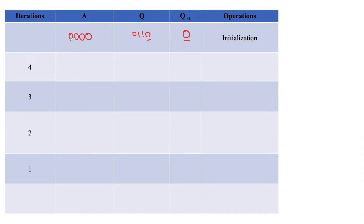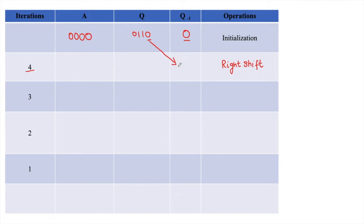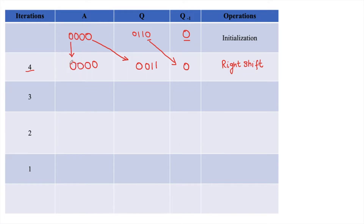The total number of bits is 4, so N equals 4. Since Q0 and Q-1 are both 0, we perform an arithmetic right shift: bring Q's last bit to Q-1 (it becomes 0), write the remaining 3 bits of Q as-is, bring the last bit of A into Q, and copy the first bit of A. After this shift, N is reduced to 3. We check whether N equals 0 — it does not — so we continue. We check Q0 and Q-1 again: they are now 1 and 0.